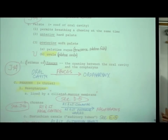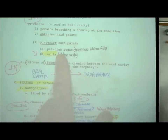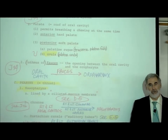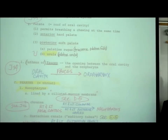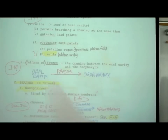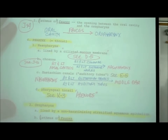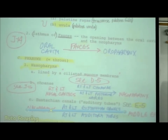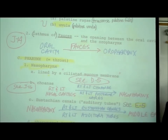The front or anterior part is the hard palate; the back part is the soft palate. On the roof of the palate are ridges called palatine rugae — rugae means ridges. The very back of the soft palate terminates in this U-shaped structure called the uvula, which is needed for swallowing. The fauces is the opening between the oral cavity and the oropharynx.